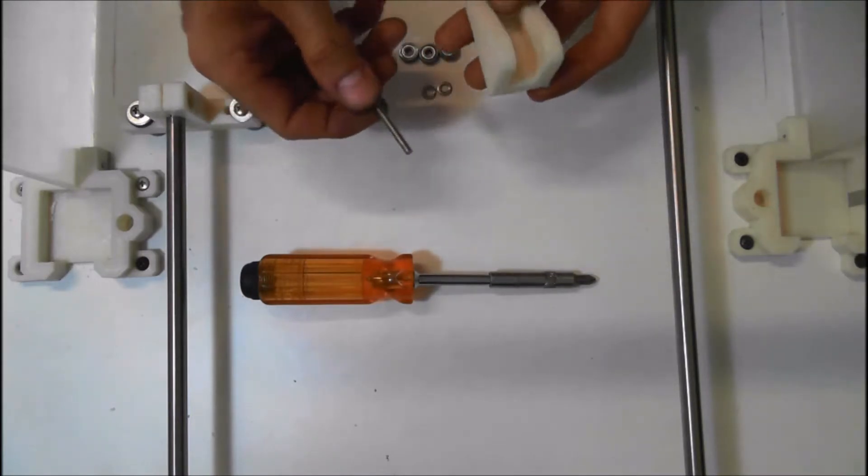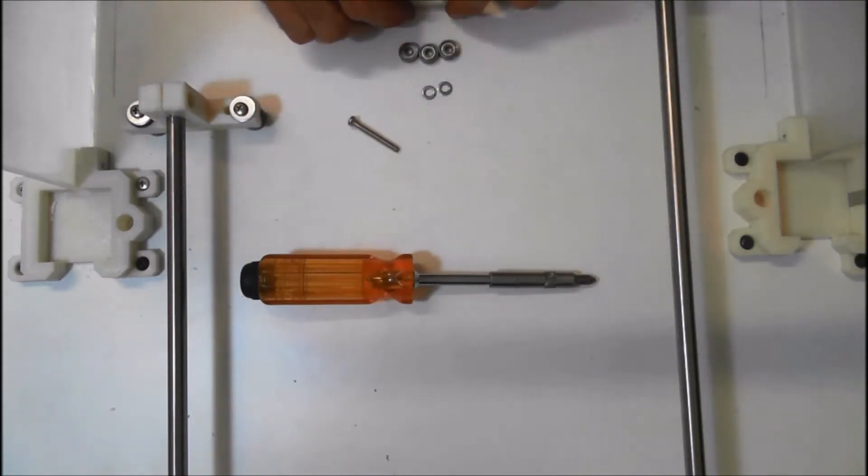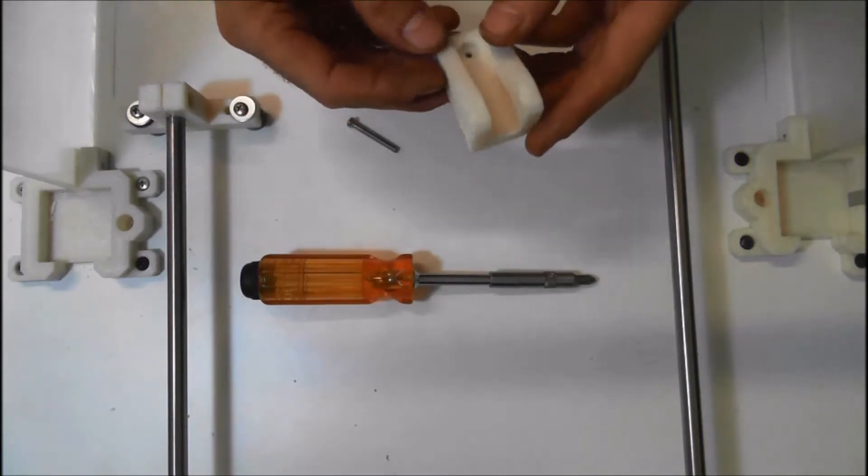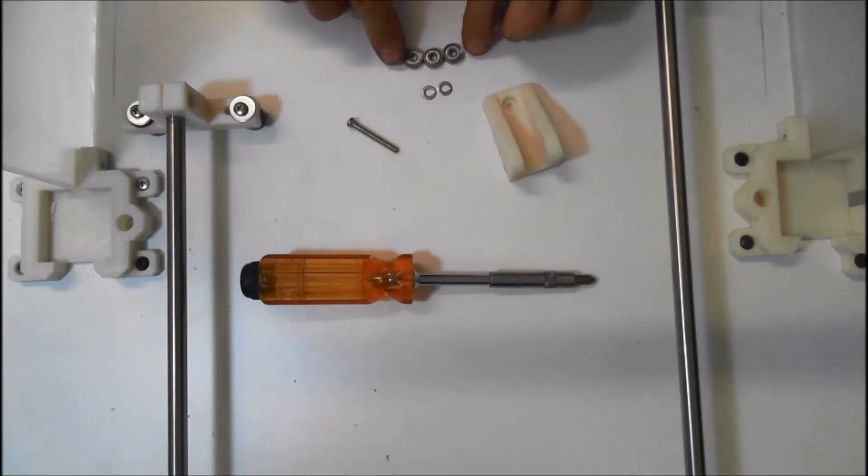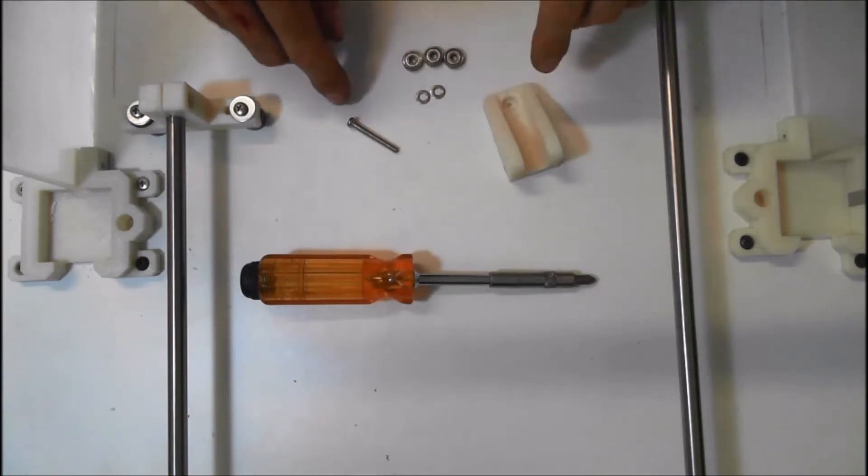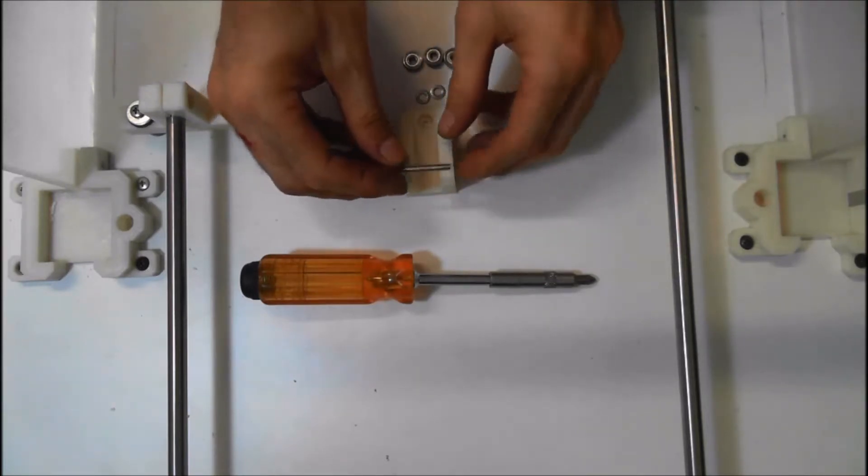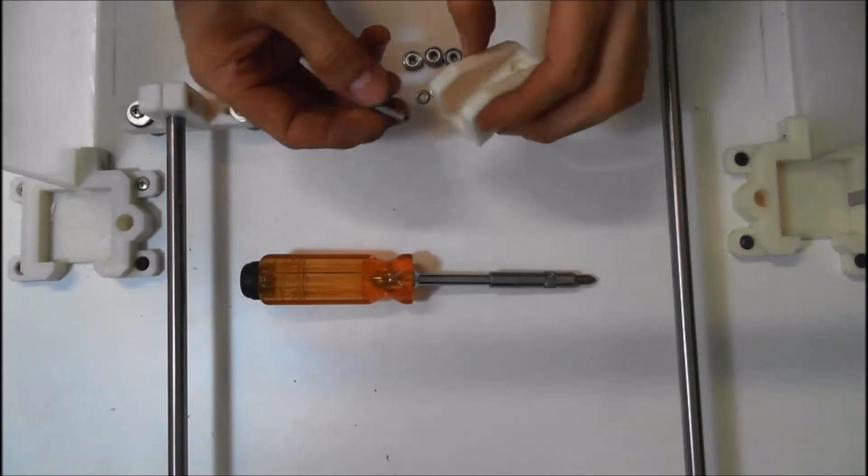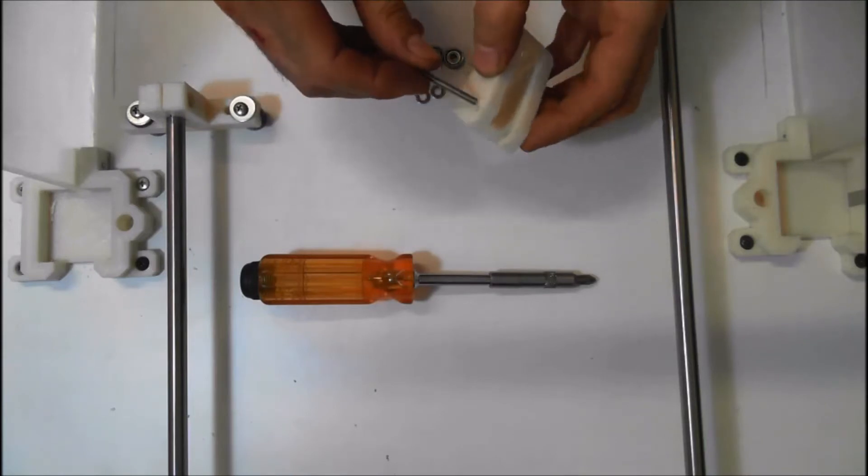Here we go with the idler. This is the idler for the y-axis and it consists of this part, the idler bracket and three of the M4 bearings and two M4 washers and an M4 screw. The screw is pretty much the same width as the idler and it's pretty easy to assemble. We don't really need a nut on it. There's enough hold in the plastic to hold the thread.